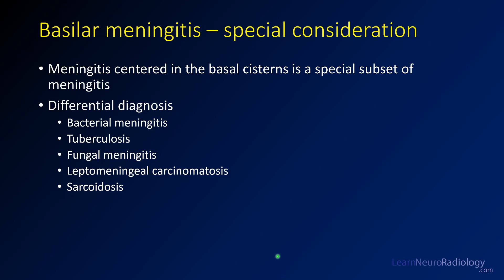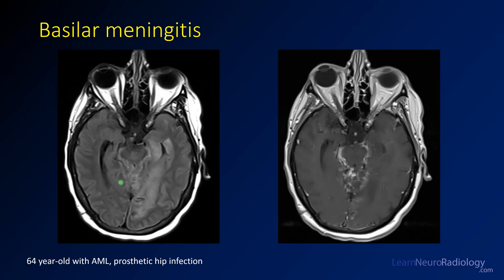Basilar meningitis is a special subset centered around the basal cisterns and sylvian fissures. It has a slightly different differential — while it can be seen with standard bacterial meningitis, you must also think of tuberculosis, fungal meningitis, leptomeningeal carcinomatosis, and sarcoid. This case shows abnormal FLAIR in the ambient cistern, quadrigeminal plate cistern, and surrounding medial temporal lobe tissue. On post-contrast imaging there is avid enhancement, including enhancement of the superior cerebellar folia. That is the hallmark of basilar meningitis requiring a broader differential.